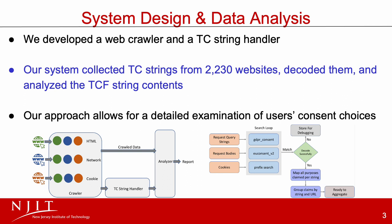The figure on the left shows the flow diagram of our system, which has three major components: a crawler that visits websites and collects data from the browsers, a TC string handler that parses and decodes the TC strings, and an analyzer that aggregates the data to generate reports.